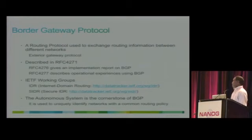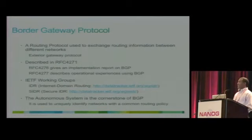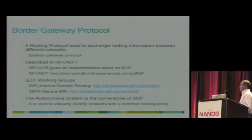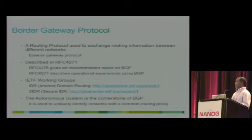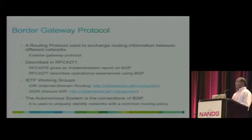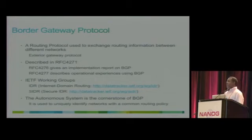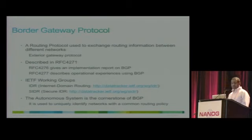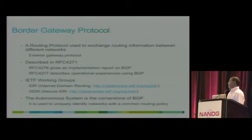VGT is a routing protocol used to exchange routing information between different networks. Networks here is a loose term — consider it a collection of routers and systems administered by a single entity. It is an exterior gateway protocol, operating between different networks rather than within a network. It is described in RFC 4271, which is the main RFC, though several other RFCs also deal with VGT.